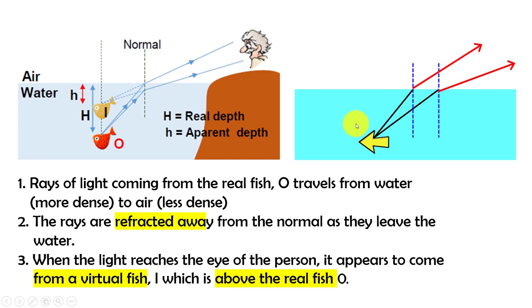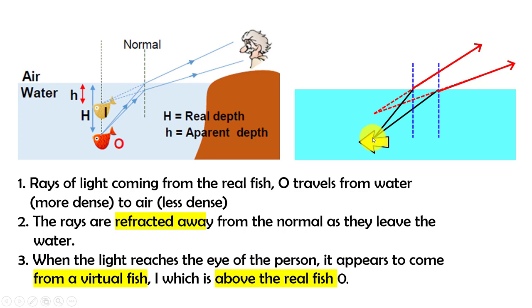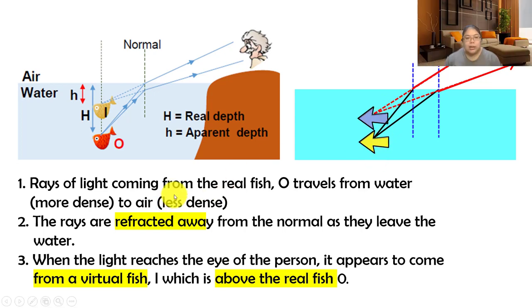Extend the red lines back into the water until they overlap. Continue drawing until they overlap - that overlap point is the location of the image. Draw the image at exactly that point. If you draw the observer's eye, you can see that the observer sees only the image, not the real object which is deeper.